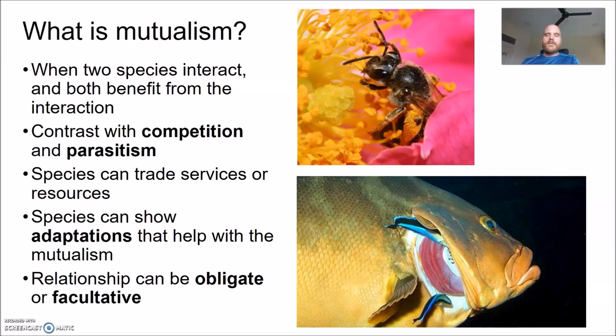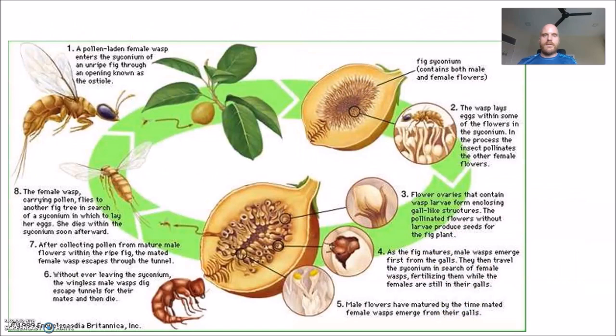The relationship between mutualistic partners can be obligate — meaning both partners must be involved in the arrangement to survive — or facultative, meaning a partner is able to survive even without the mutualism. It's also worth pointing out that relationships can be asymmetric: for one partner the relationship could be obligate, and for the other it could be facultative.